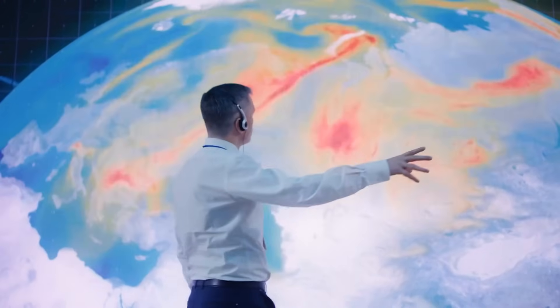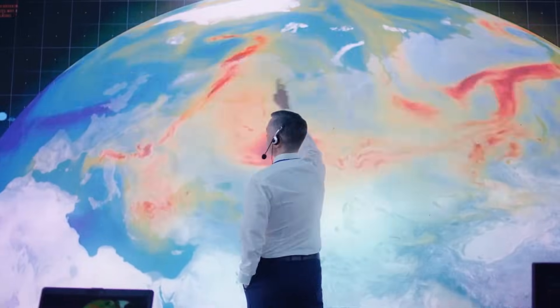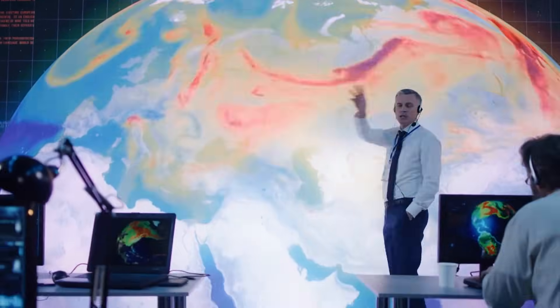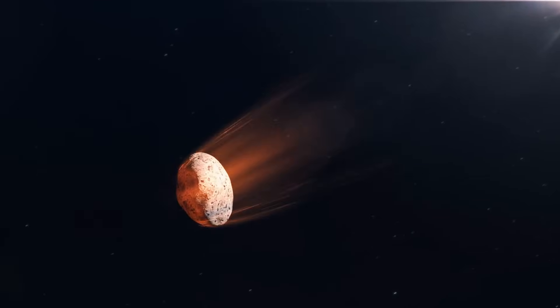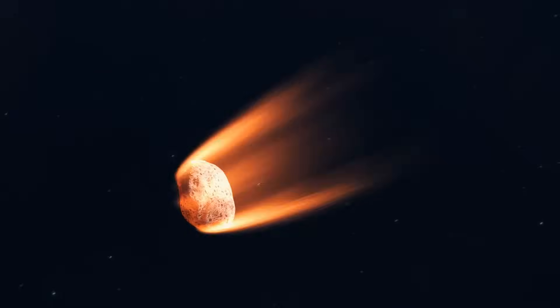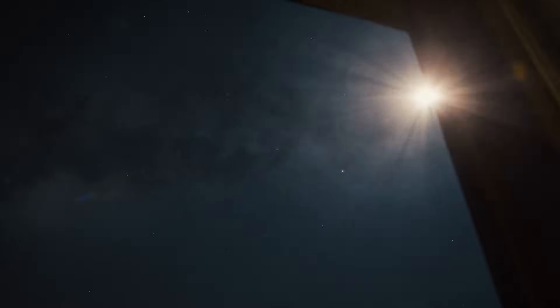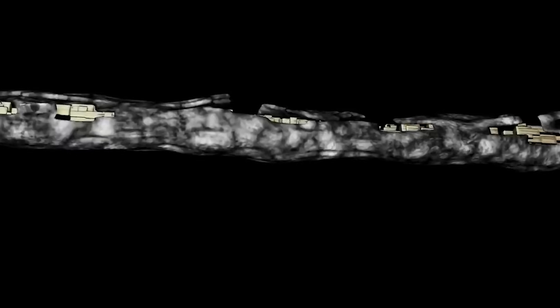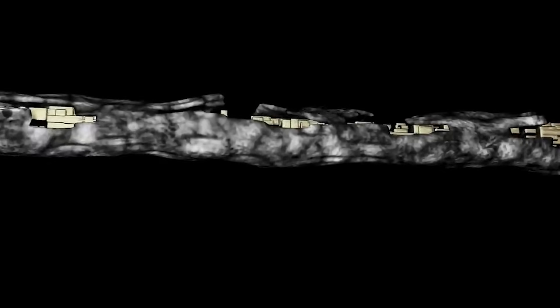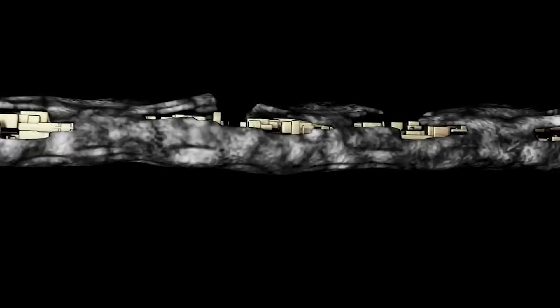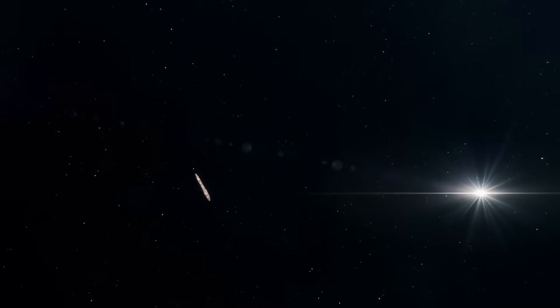Astronomers have been baffled by 'Oumuamua's peculiarities, but the most likely explanation is that it is a rare kind of comet or asteroid. Its lengthy voyage across interstellar space most likely changed its composition, resulting in the formation of a crust that contained the majority of the frozen gas. The Spitzer Space Telescope findings corroborate this explanation, which explains the peculiarities.